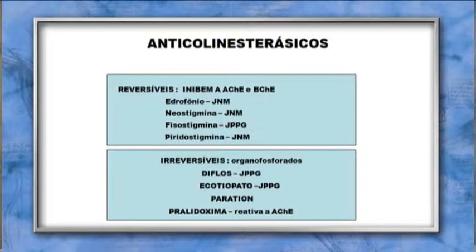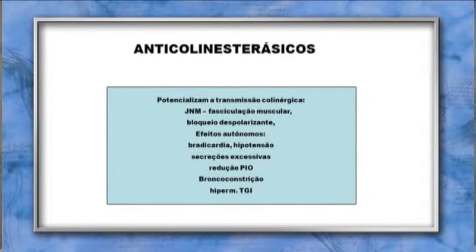Os anticolinesterásicos irreversíveis são os organofosforados — diflox, ecotiofato e paratião — que causam intoxicação cuja reativação da acetilcolinesterase pode ser feita com pralidoxima. É importante lembrar que os anticolinesterásicos devem ser usados com controle rigoroso, boa indicação e doses adequadas, pois potencializam a transmissão colinérgica. Na junção neuromuscular, podem induzir fasciculação muscular, bloqueio despolarizante, efeitos autonômicos como bradicardia, hipotensão e secreção excessiva, além de reduzir a pressão intraocular, causar broncoconstrição e hipermotilidade do trato gastrointestinal.